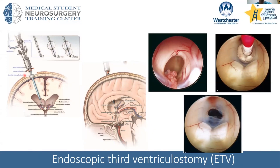This procedure involves a burr hole and opening the bone, then passing an endoscope — a camera with a light at the end — into the ventricle. Going through the lateral ventricle, through the foramen of Monroe, into the third ventricle. We then pass a balloon-tipped catheter — essentially like a Foley catheter — and expand it through the floor of the third ventricle, basically poking through to create a new channel for CSF to drain within the body. It's a beautiful surgery where you can really see all the anatomy.